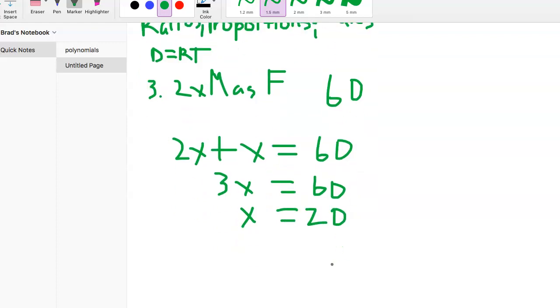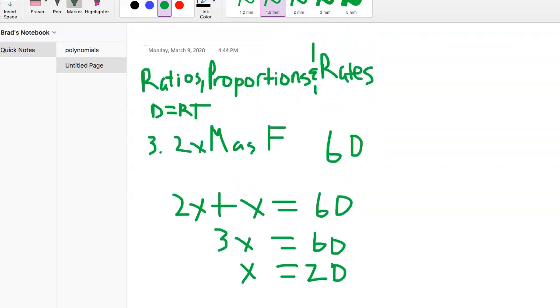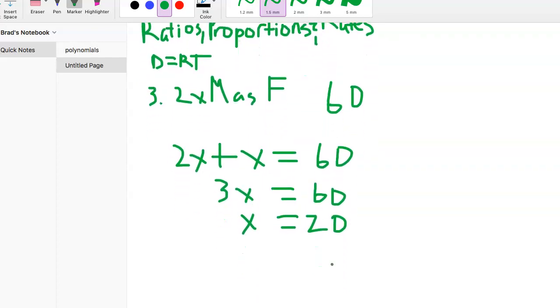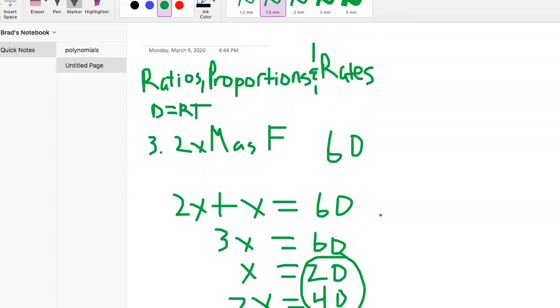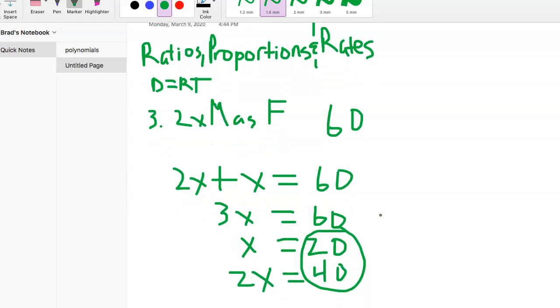Make sure you don't just stop there. Remember we said that males was 2X and females was X, so females we have 20. 2X: 20 times 2 is 40. There's our answer: 40 males, 20 females. 40 plus 20 is 60. Everything's lined up.